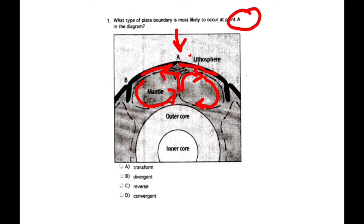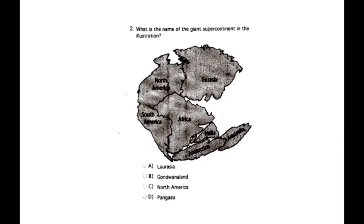What's happening is at this point they're pushing these two plates apart. So we call this type of boundary a transform, divergent, reverse, or convergent? What kind of boundary is happening right here where they are pushing apart, getting farther and farther apart? It's called a divergent boundary. Diverge means to move apart or to just split in two.